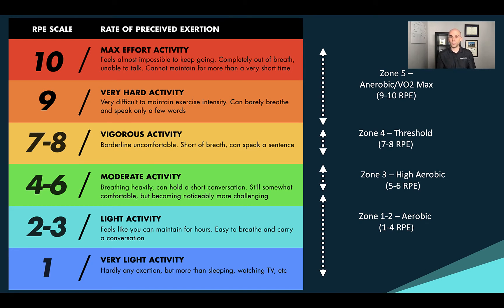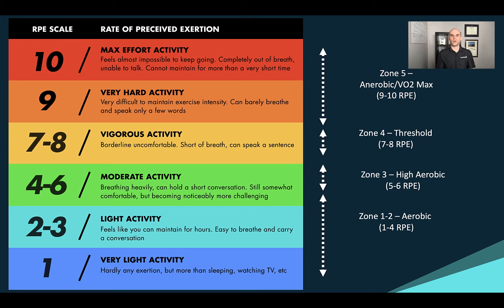If you're not familiar with RPE — rate of perceived exertion — here is a chart showing what it is. It goes from 1 to 10. A 1 means you're awake but not doing much. A 2 to 3 is lighter activity you could sustain for a long time. A 4 to 6 is moderate — breathing might be strained but you can still hold a conversation. A 7 to 8 is anaerobic threshold territory. At 9 or 10, you're working very hard and can't hold that effort for long.